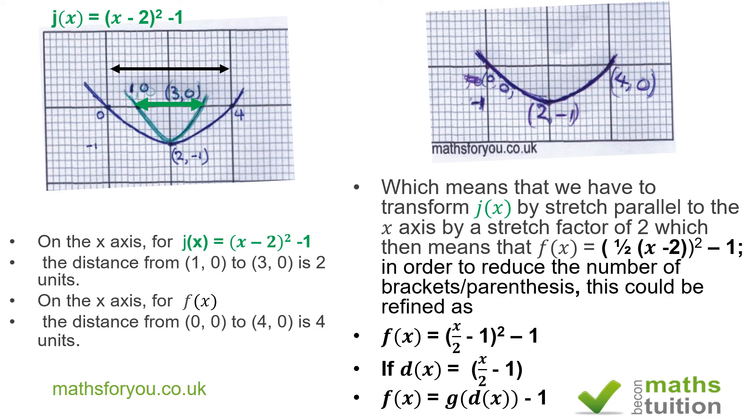But bearing in mind that we started off with g(x) equals x squared, if we say that d(x) is equal to x over 2 minus 1, we can dare to write f(x) as g of d(x) minus 1. So all we do is to replace x in g(x) by d(x) there, and that should also be a great answer. Thank you for watching and please please subscribe. Bye-bye now.